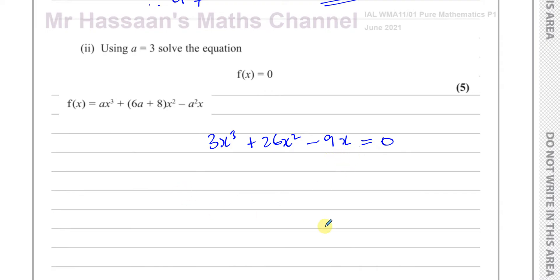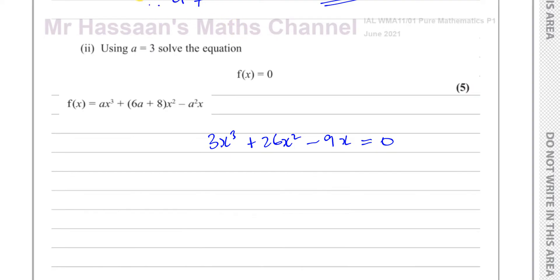This is a cubic equation. Again, you could use your calculator's polynomial equation function — entering degree 3 with a=3, b=26, c=−9, d=0 — and get the answers directly. However, you cannot do that in this question without losing marks, because the question states clearly you must not rely on calculator technology. You have to show your factorization. This is the type of cubic in P1 where x appears in every term, so you can take out x as a factor.